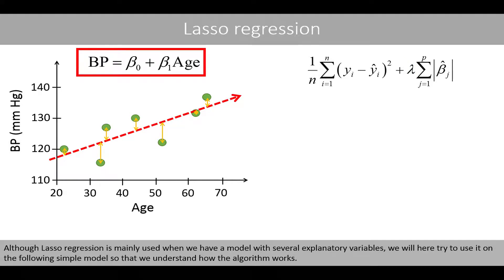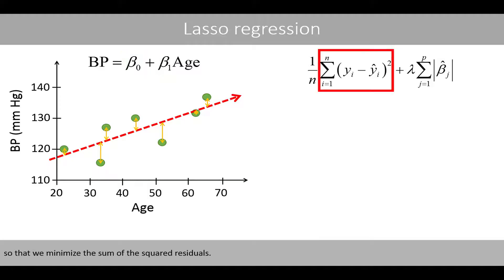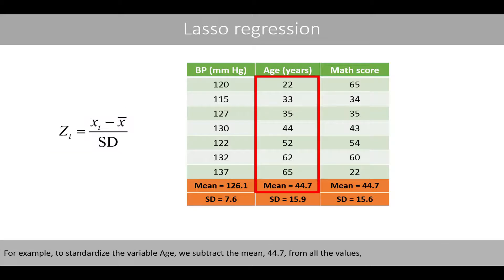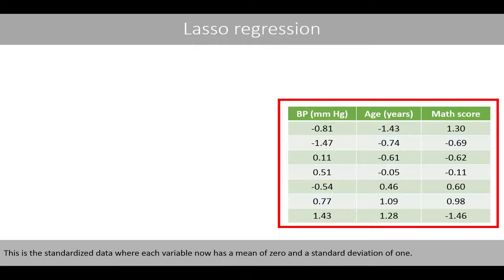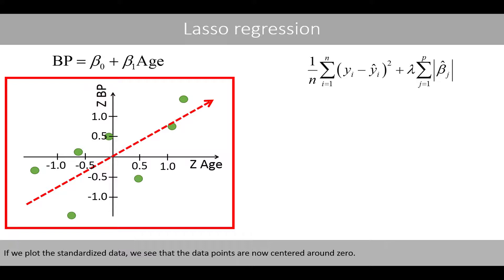Although LASSO regression is mainly used when we have a model with several explanatory variables, we'll here try to use it on a simple model so that we understand how the algorithm works. LASSO regression usually begins by standardizing explanatory variables. This is because we do not want a certain unit of a variable to influence the fitting process. For example, to standardize the variable age, we subtract the mean from all the values and divide these differences by the standard deviation of the corresponding variable. This is the standardized data where each variable now has a mean of zero and a standard deviation of one. For convenience, we'll also standardize the response variable. We see that the data points are now centered around zero.